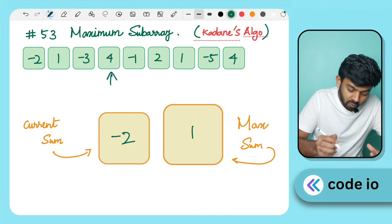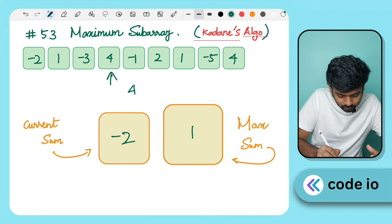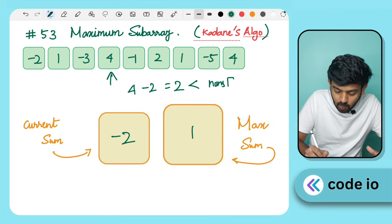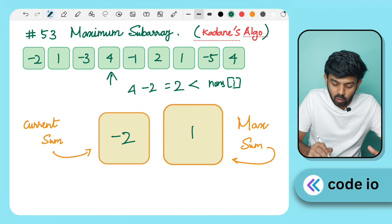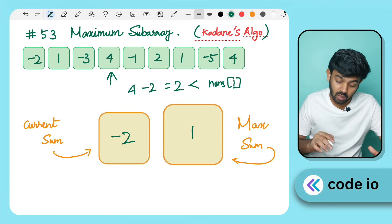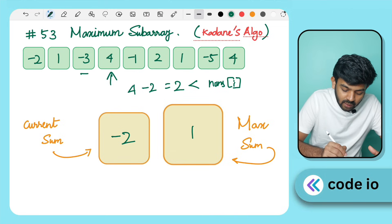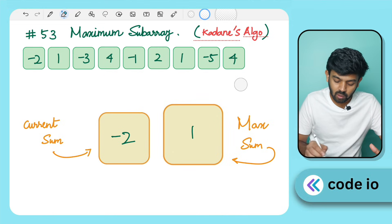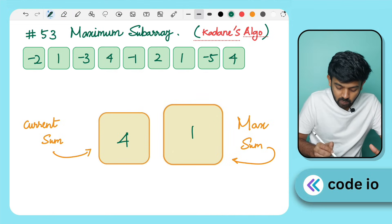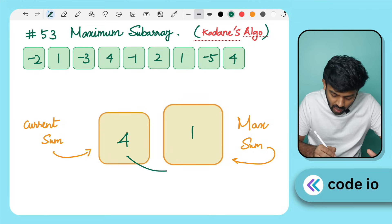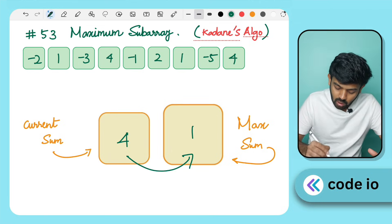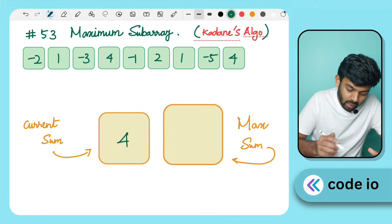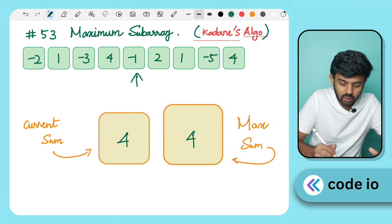Now we process element 4. We add 4 to CurrentSum: 4 plus minus 2 equals 2. We compare: is 2 less than nums[i] which is 4? Yes, so it is better to start fresh from this element. CurrentSum is replaced with 4. We compare: is 4 greater than MaxSum which is 1? Yes, so MaxSum is updated to 4.